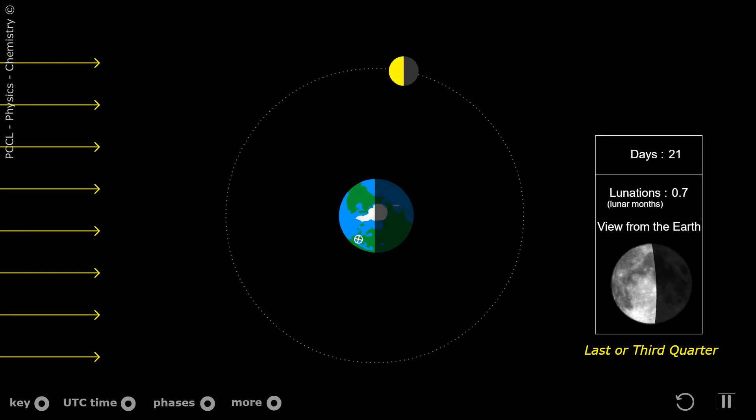The Earth, therefore, will have rotated. The number of days is the number of rotations of the Earth. When the moon has made a full revolution in its orbit, the Earth will have rotated approximately 29 times.